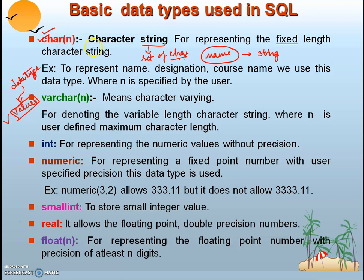Wherever you find CHAR, it means it will accept only a set of characters or alphabets. The 'n' mentioned in the brackets is nothing but the fixed length — how many characters are allowed in this data item. For example, CHAR(10) will accept only a string whose length is exactly 10 characters.